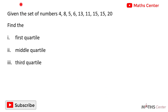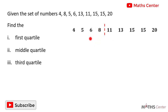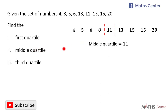Let's consider another question. Given the set of numbers 4, 8, 5, 6, 13, 11, 15, 15, 20, find the first quartile, the middle quartile and the third quartile. Arranging in ascending order we get 4, 5, 6, 8, 11, 13, 15, 15 and 20 — 9 in total. When we divide into two equal parts, we have 4 to the left and 4 to the right, with one number in the middle. So the middle quartile or the median is 11.